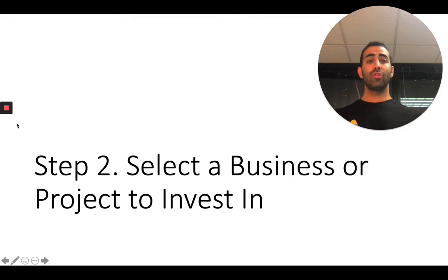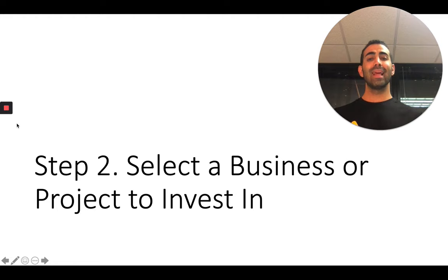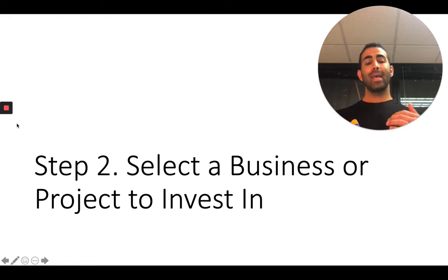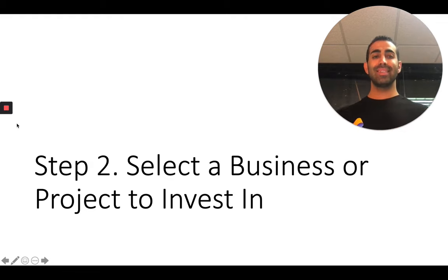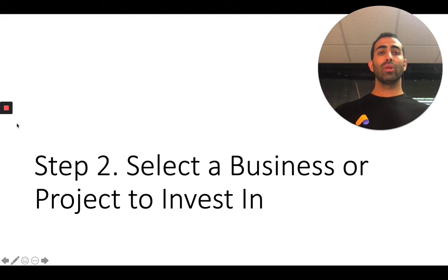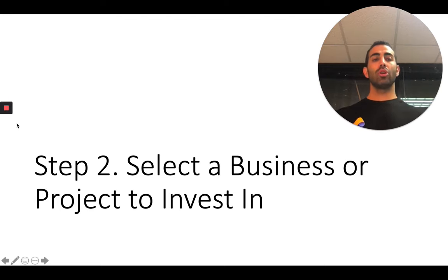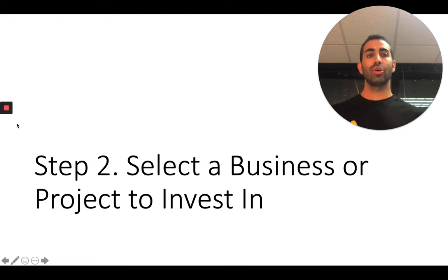After you've done that and determined that EB-5 is the correct route for you, the next step is to select a business or a project to invest in. You have multiple options: you can purchase an existing business, start a new business, or invest in a regional center. Once you've determined step two, you need to decide which type of investment you're going to make.